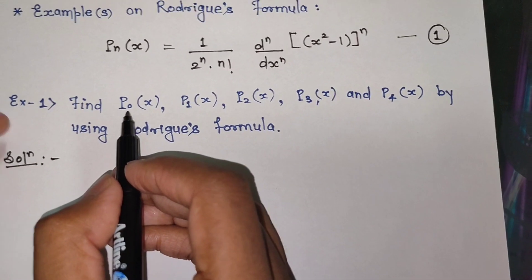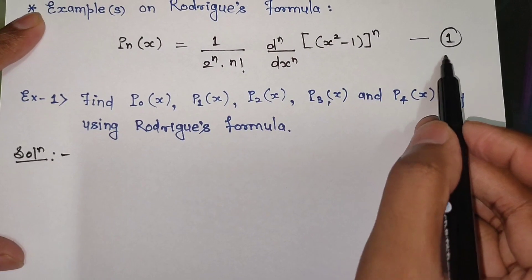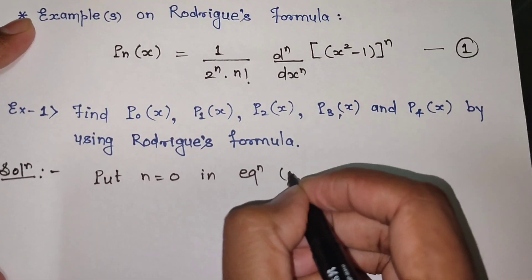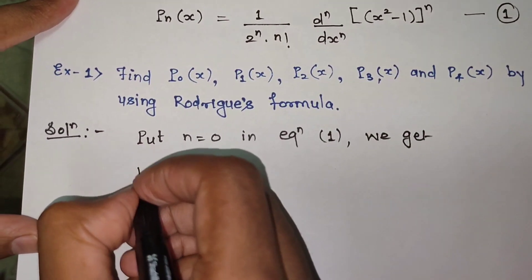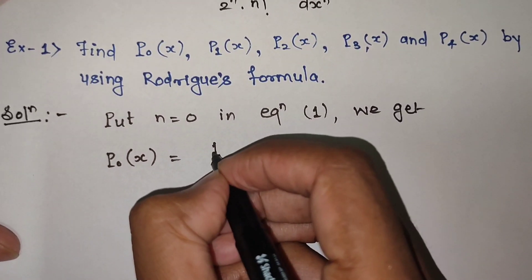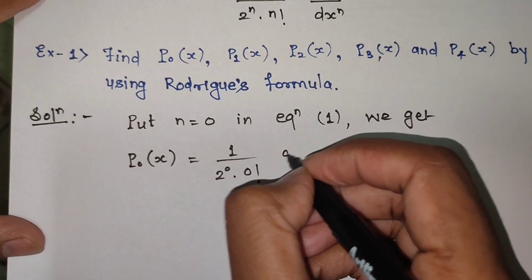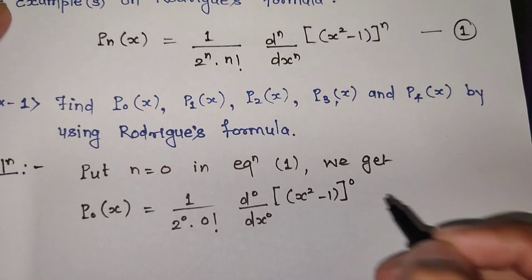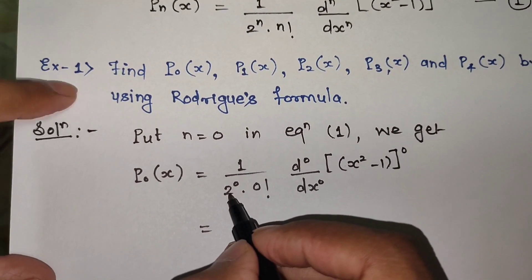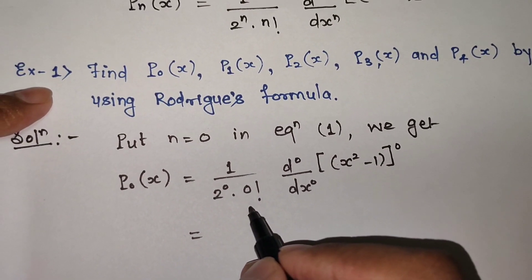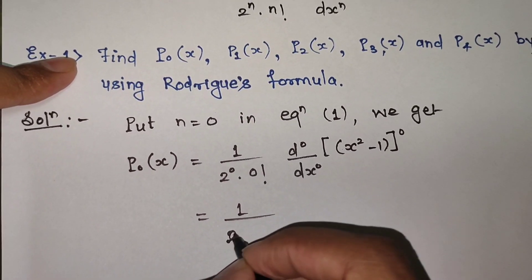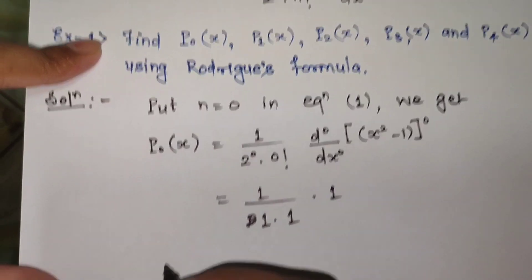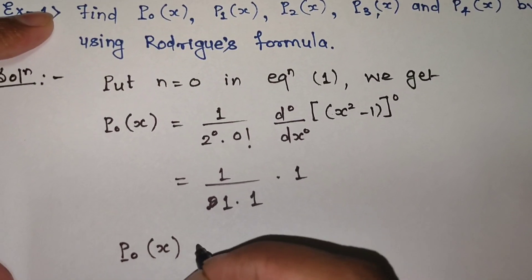First we want P0(x). We need to put n = 0 in equation 1. We get P0(x) = 1 upon 2⁰ into 0 factorial, times the 0th order derivative of (x² - 1)⁰. Anything to the power 0 is 1, 0 factorial is 1, and the 0th order derivative means the original term. So we get 1 × 1 × 1 = 1, therefore P0(x) = 1.